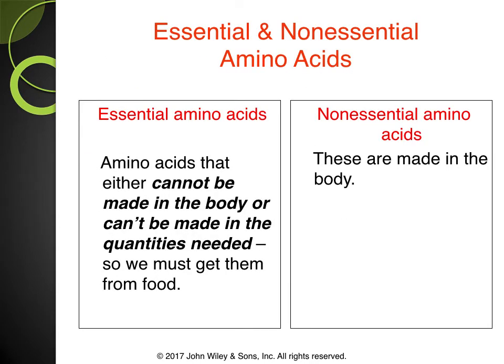There are essential and non-essential amino acids. Non-essential amino acids are ones our body can make naturally. Essential amino acids, however, must be acquired from food — they either cannot be made in the body or can't be made in the quantities needed. So we must get them from food.